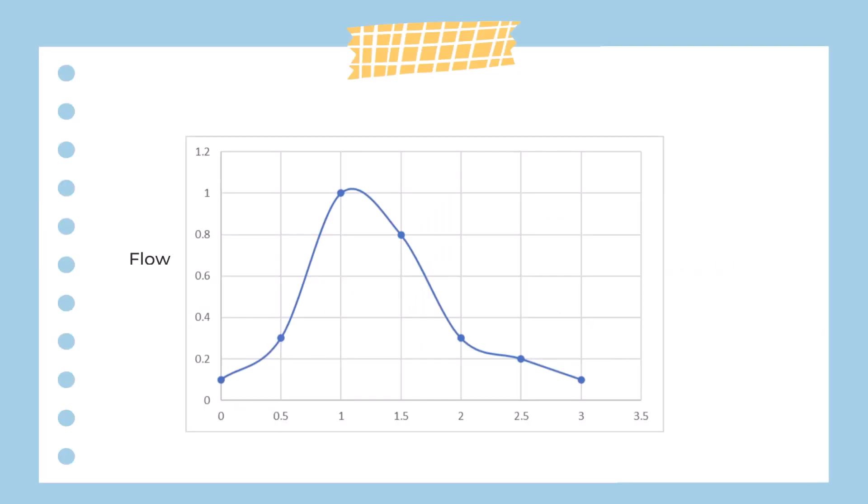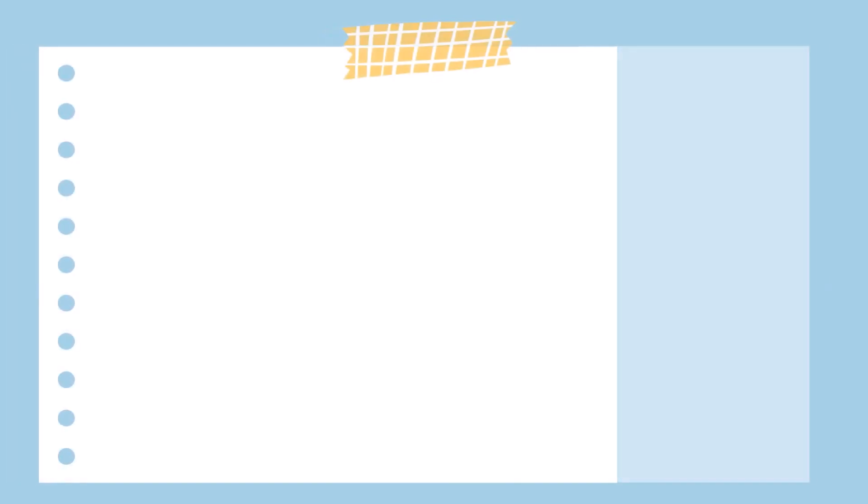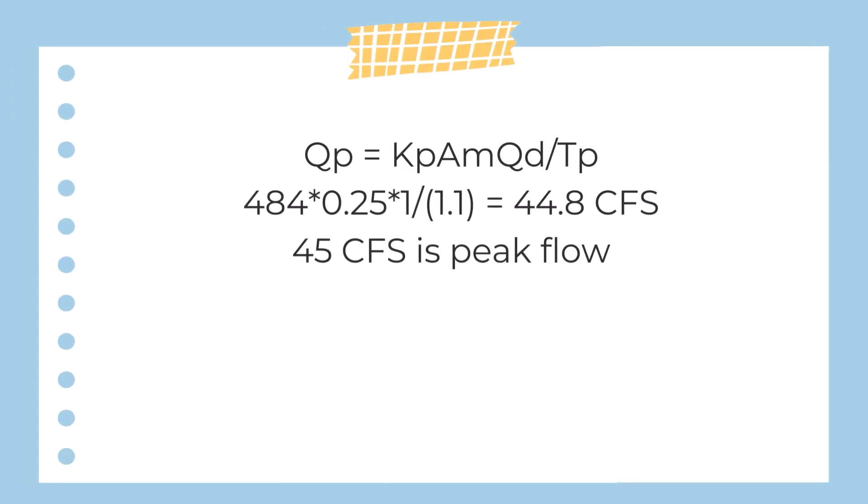We can see here we have our hydrograph, let's identify the base flow. It begins increasing here and begins falling off here, so that's what we'll identify as our base flow. Now let's solve the equation. The peak flow equals 484 times 0.25 times 1 divided by 1.1, since the time to peak based on hours looks to be about 1.1. So 45 CFS is the peak flow in this case.